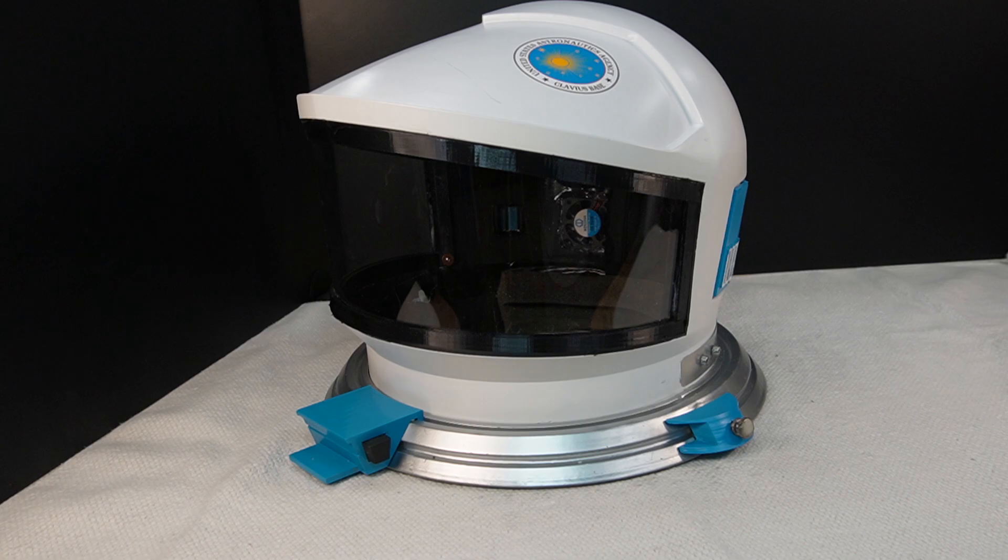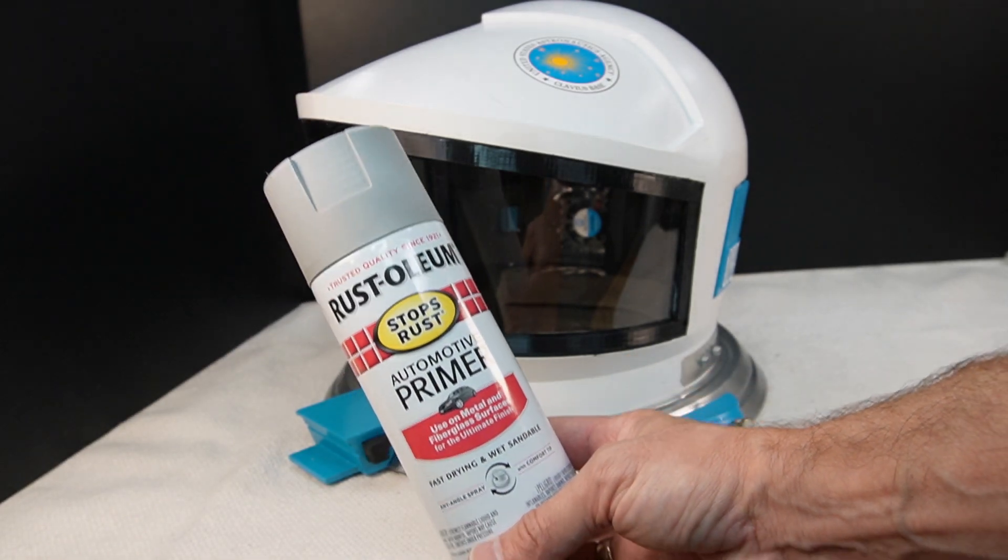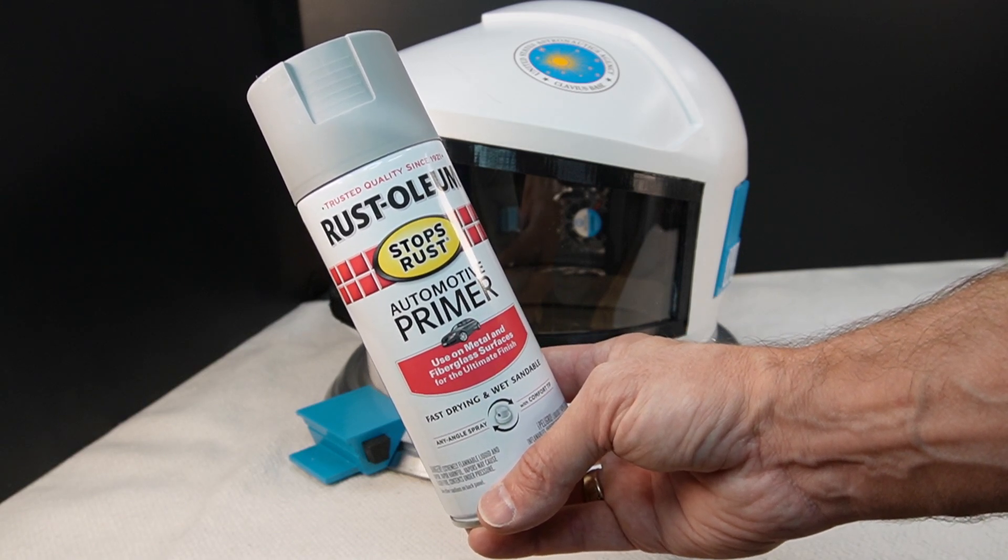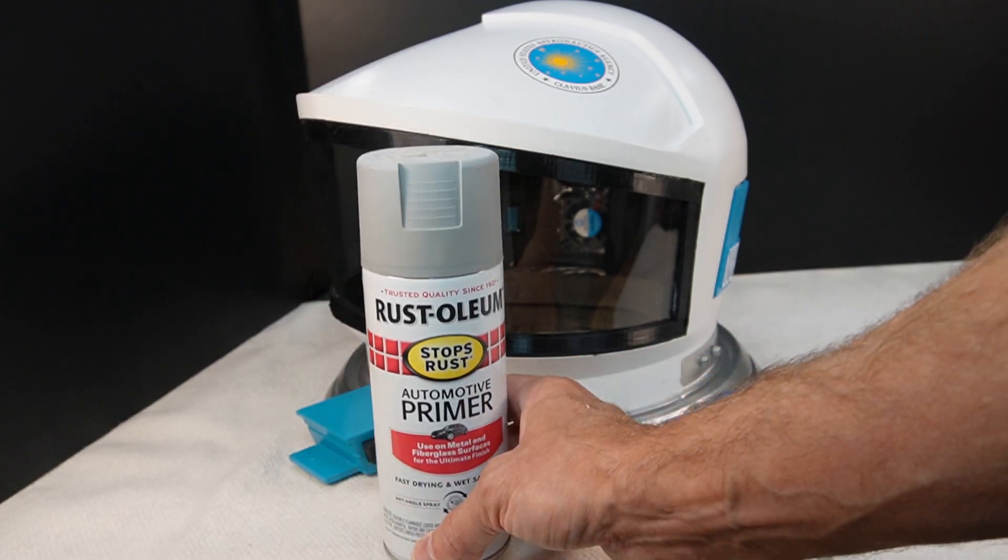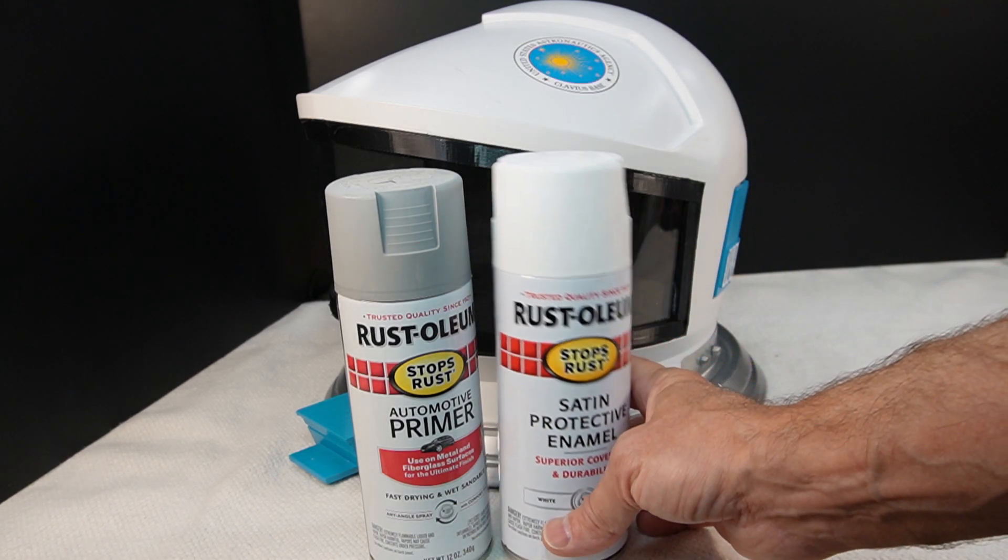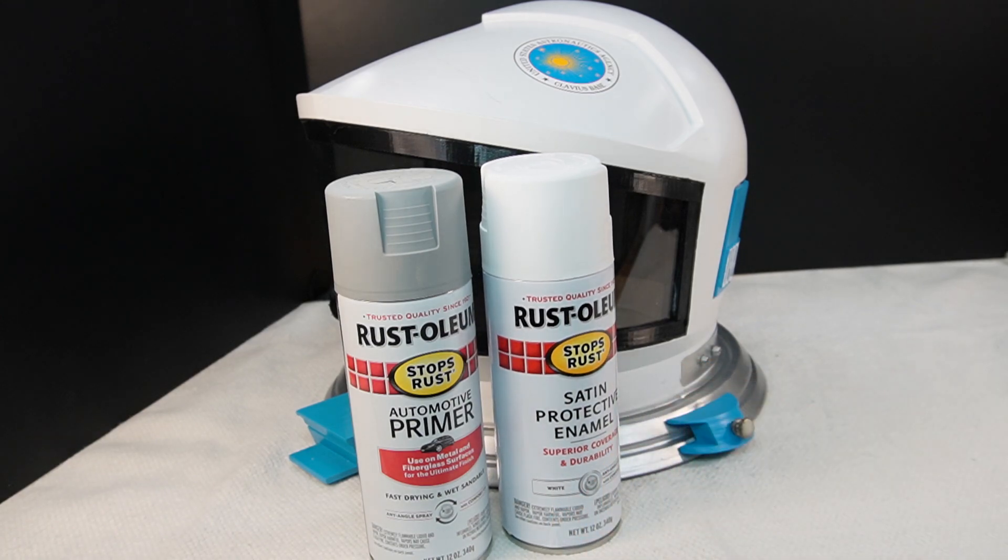Once you have it all Bondoed and spot puttied, then you sand it smooth and hit it with a can of this primer. I highly recommend the Rust-Oleum line of paints. They're very tough and formulated to work well together. The primer works very well with the finished coat and I use a satin finish coat. Satin tends to mask any potential runs you might have and gives it a little bit of sheen without showing every little possible paint drip.